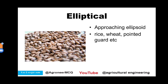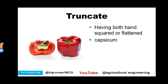Elliptical shape, as the name itself indicates, is approaching towards an ellipsoid. Examples are rice, wheat, and pointed gourd. Truncate shape has both ends squared or flattened. The example of truncate shape is capsicum.